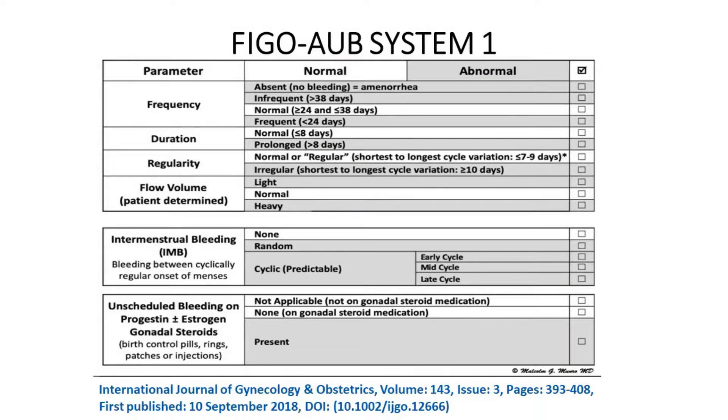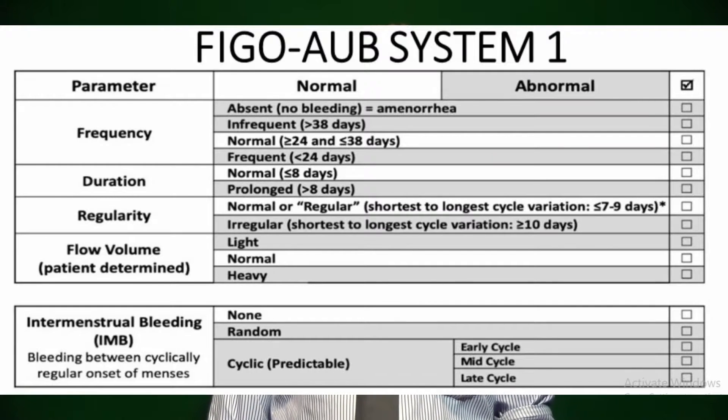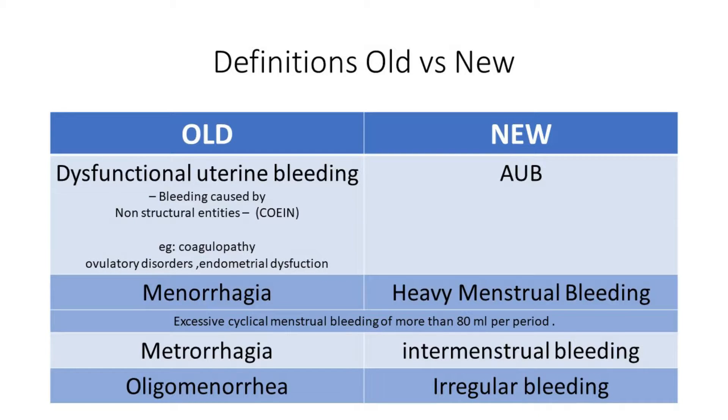The amount of menstrual blood loss should be less than 80 millilitres. In FIGO System 1, which defines the normal parameters of menstrual bleeding, the parameters are frequency, duration, flow or volume, and regularity. We no longer use the terms dysfunctional uterine bleeding, menorrhagia, metrorrhagia, and oligomenorrhea. Instead, we use new terms: menorrhagia is replaced by heavy menstrual bleeding, metrorrhagia by intermenstrual bleeding, and oligomenorrhea comes under irregular bleeding.